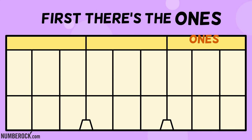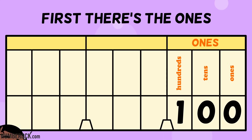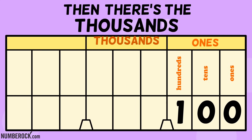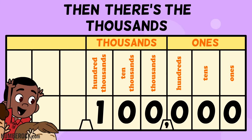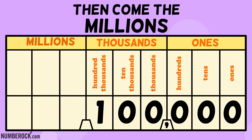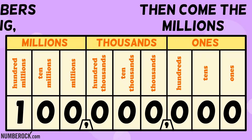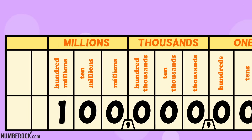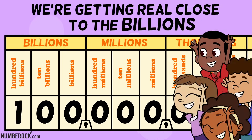First there's the ones: ones, tens, hundreds. Then there's the thousands: one thousands, ten thousands, hundred thousands. Then come the millions: one millions, ten millions, hundred millions. And when numbers get that big, we're getting real close to the billions.